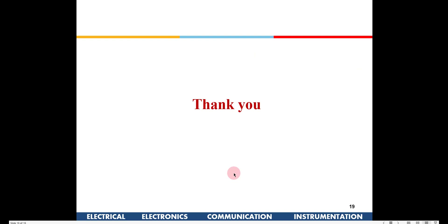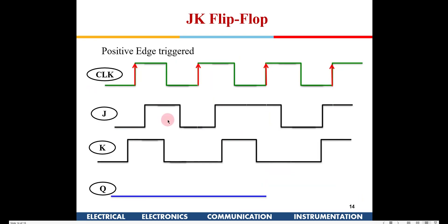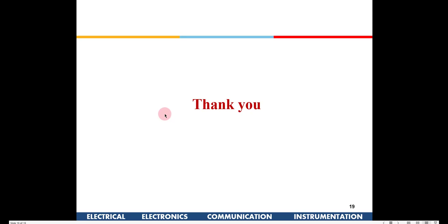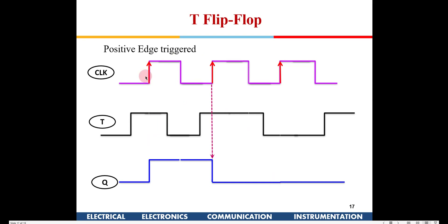Today we have learned not only about latches but also about flip-flops — these are the basic building blocks. Before the next class, at least be clear about the operation of these three flip-flops — D, JK, and T. You don't need to memorize the gate-level implementation, but you should clearly know how these flip-flops work with respect to the clock and the input, and how the output changes. This will be essential for the next class where we will design sequential circuits.